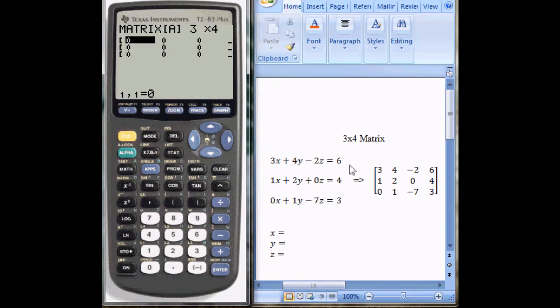Now arrow down and simply enter the numbers in this matrix: 3, press enter, and it automatically moves you over to the next element. Then input 4, enter, negative 2, enter, 6, enter, and it moves you down to the next row. So you don't need to use your arrow keys.